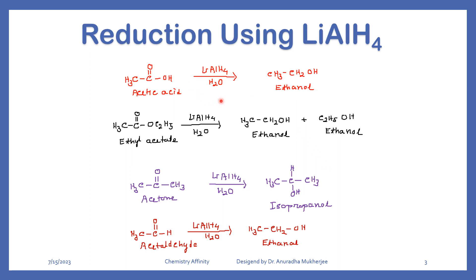Lithium aluminum hydride reduces acetic acid to a primary alcohol, so here we are getting ethanol. This is ethyl acetate — in an ester, the CH3CO part comes from carboxylic acid and the OC2H5 comes from alcohol. So in the presence of lithium aluminum hydride, ethyl acetate gives two molecules of alcohol: the CH3CO part gives a primary alcohol and OC2H5 gives ethanol.